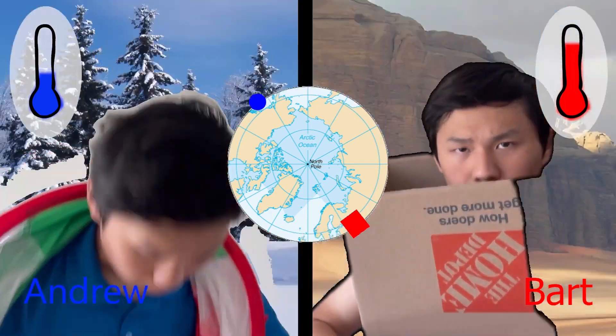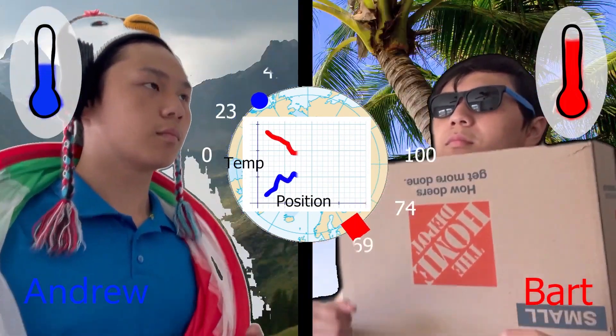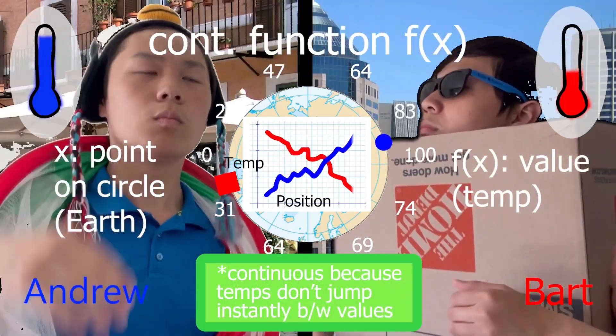How? Let's say that Andrew is colder. This graph will show us their temperatures on their journey. As Andrew and Bart travel, this graph creates a continuous function that turns a point on the circle to a value in temp.